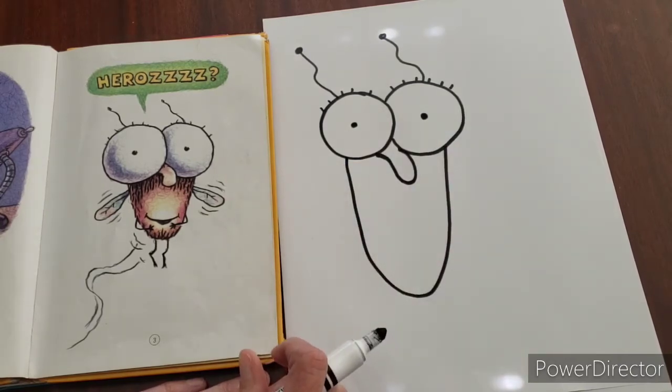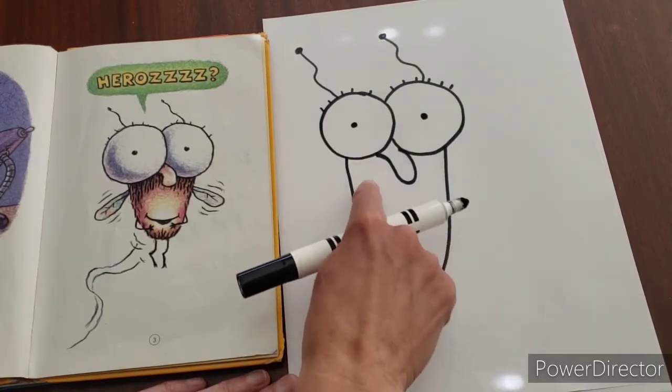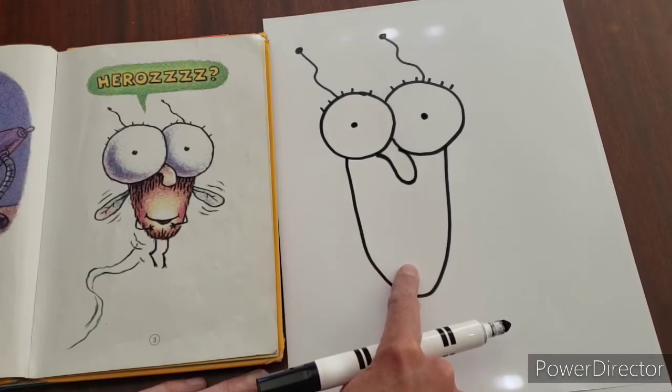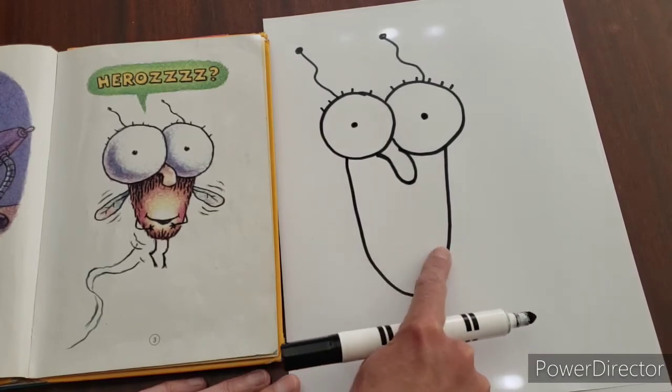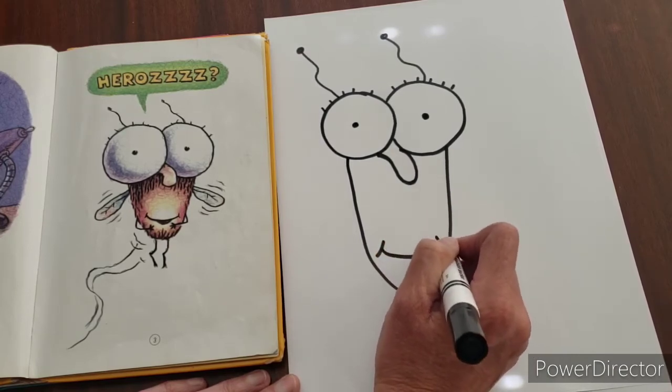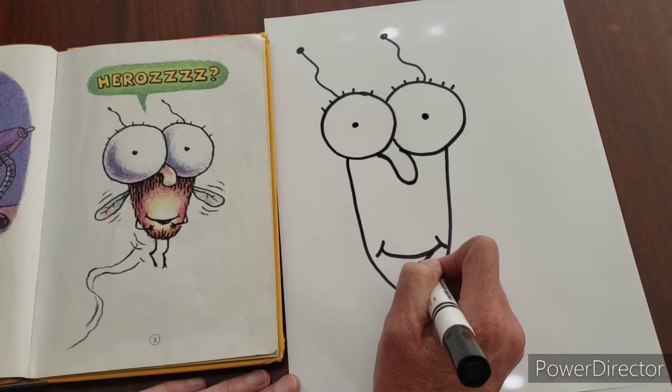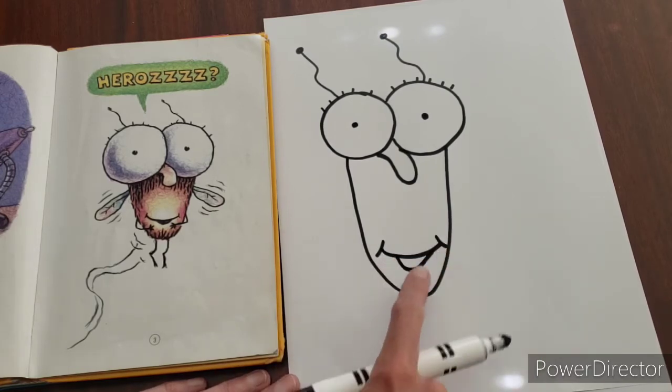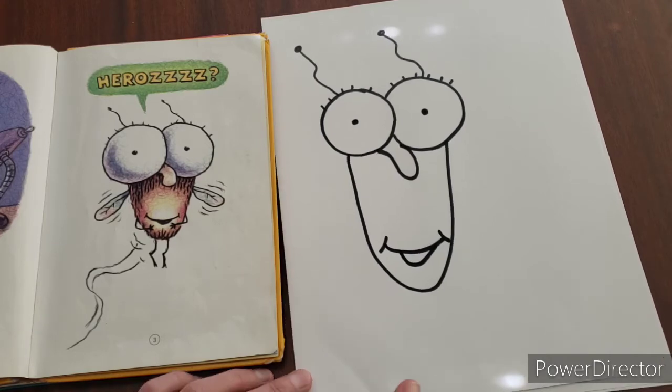Down here we're going to make his mouth. I know he's got kind of a funny body. His mouth is sort of on the bottom of his body, which is a little silly, but that's why he's so cute. So you do the top of his mouth and then the bottom.